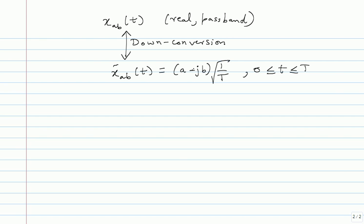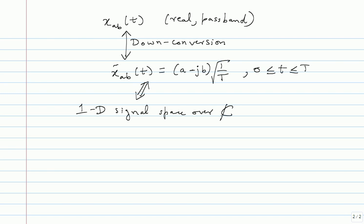If you take all these x̃_{ab} and do Gram-Schmidt over ℂ — with complex vector spaces — you will see you get only one basis. That basis is simply root(1/T) between 0 and T. This signal space is a one-dimensional signal space over C, the complex numbers. The basis is just a constant function between 0 and T.